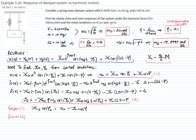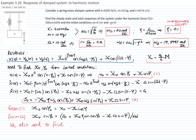Solving these two equations, X0 cosine of phi0 equals the initial displacement minus X cosine of phi. And from the second equation, I can find X0 sine of phi0, which equals the initial velocity plus zeta omega_n times X0 cosine of phi0, divided by omega_d.